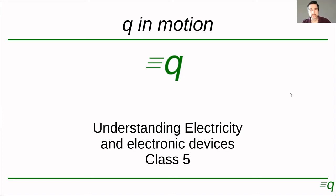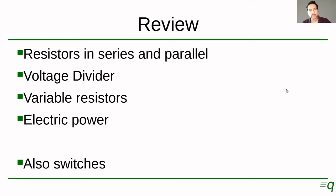Welcome to Keen Motion's course on understanding electricity and electronics devices. Today we're going to start with our fifth class. As usual we will start with the review of what we saw in previous classes. Last class we saw resistors in series and parallel, then voltage divider, variable resistors, and we learned about electric power. On a previous class we also studied switches. Keep the part of switches in mind because that will come handy today when we study relays.